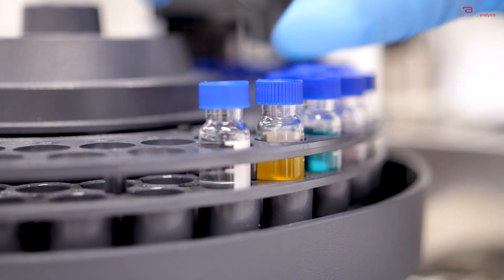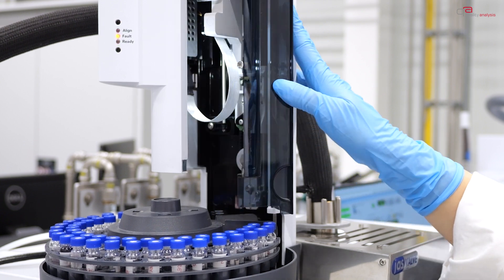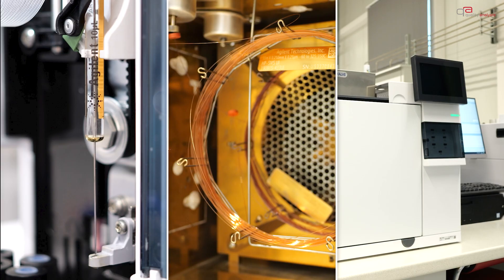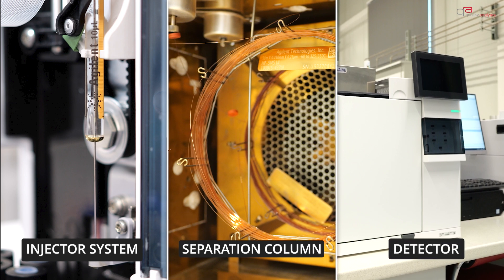A gas chromatograph consists of three main components that perform different functions during the analysis: the injector system, the separation column, and the internal detector.